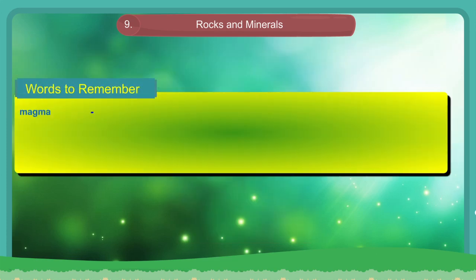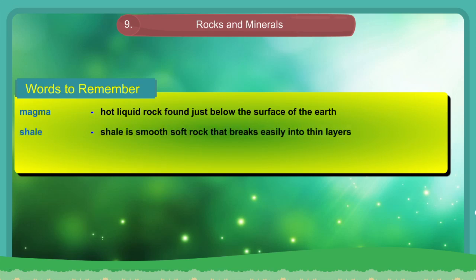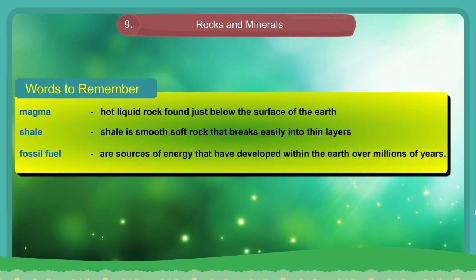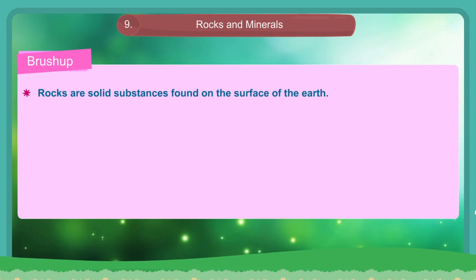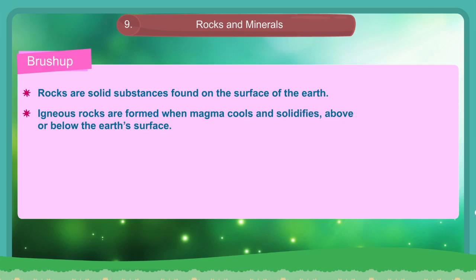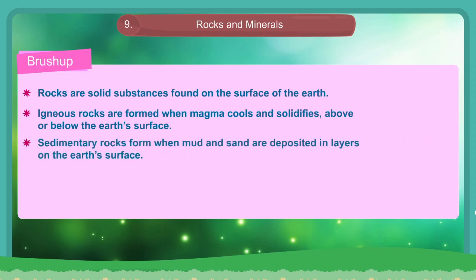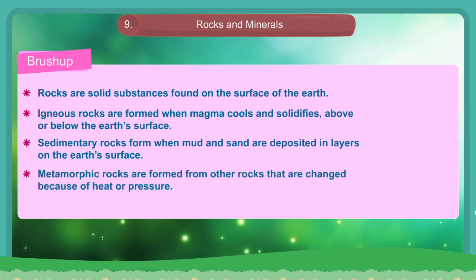Words to Remember. Magma: hot liquid rock found just below the surface of the earth. Shale: a smooth soft rock that breaks easily into thin layers. Fossil fuel: resources of energy that have developed within the earth over millions of years. Brush Up. Rocks are solid substances found on the surface of the earth. Igneous rocks are formed when magma cools and solidifies above and below the earth's surface. Sedimentary rocks form when mud and sand are deposited in layers on the earth's surface. Metamorphic rocks are formed from other rocks that are changed because of heat or pressure. All rocks are made up of minerals.